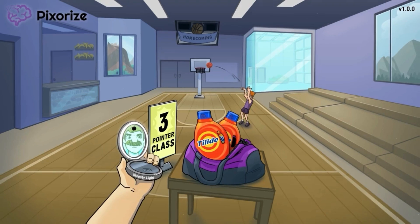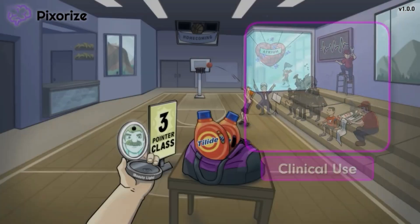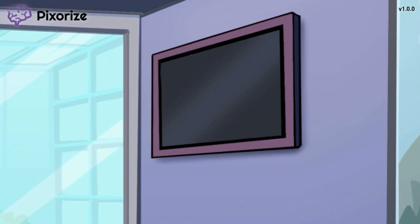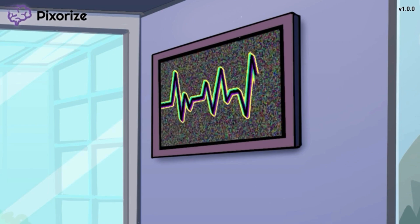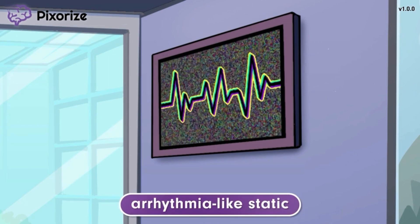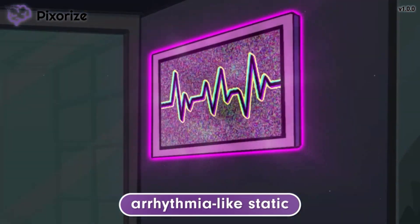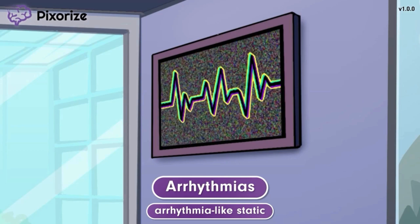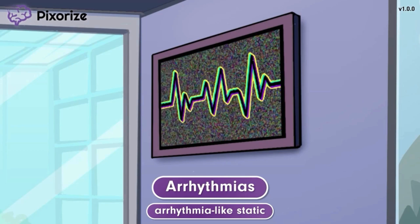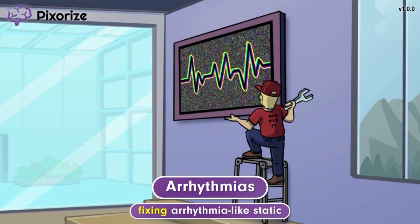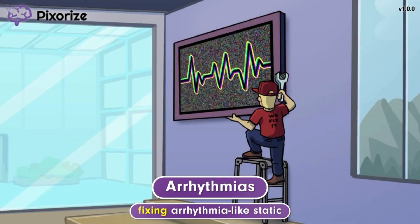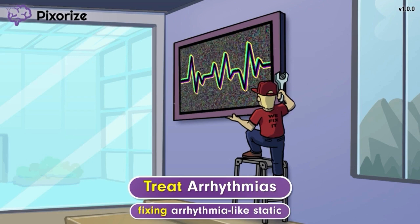Let's shift gears to learn how these drugs are used in the clinical setting. The basketball court has a screen to broadcast the game; however, someone broke the screen today, so there's static running across it. This arrhythmia-like static is our recurring symbol for cardiac arrhythmias — a group of medical conditions in which the heart beats with an irregular rhythm. A repairman is fixing the screen, symbolizing how Dofetilide and Ibutilide fix or treat arrhythmias. In other words, they are antiarrhythmics.